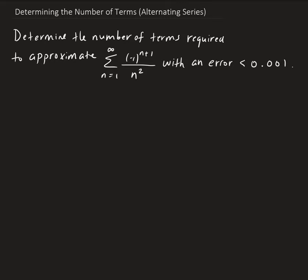To do this, we're going to use the residual for the alternating series. Recall that the residual is equal to S minus the nth partial terms, and that is less than or equal to the (n+1)th term.